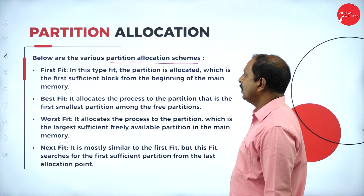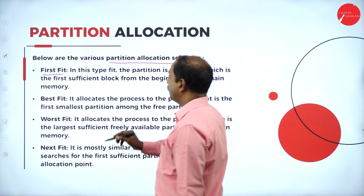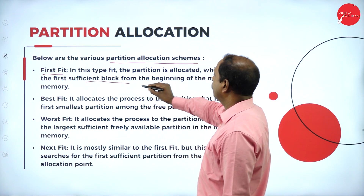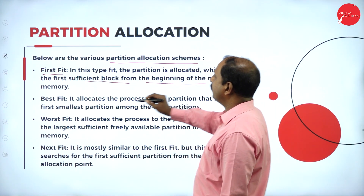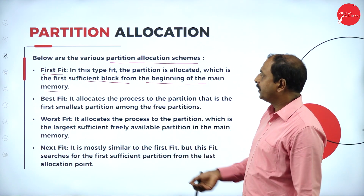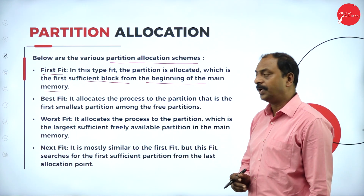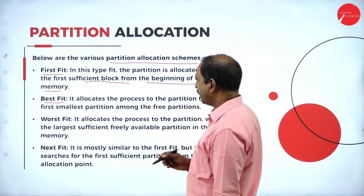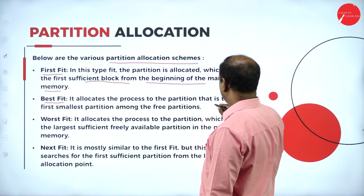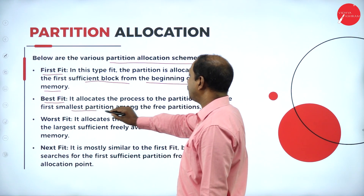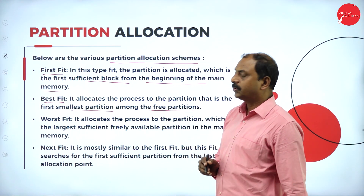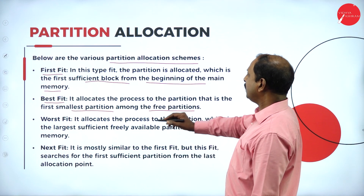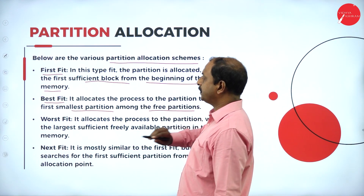Partition allocation schemes: The first scheme is first fit, where the partition allocated is the first sufficient block from the beginning of main memory — it stores information from the beginning of memory. The second scheme is best fit, which allocates the process to the first smallest partition among the free partitions. It is possible to have partitions of different sizes, and the process is allotted to the smallest available partition.